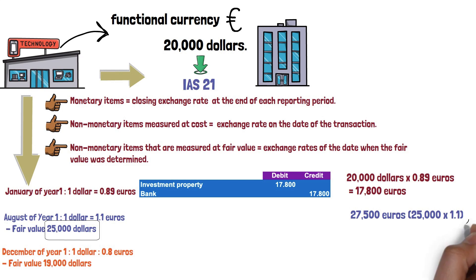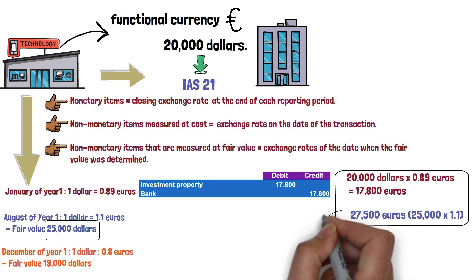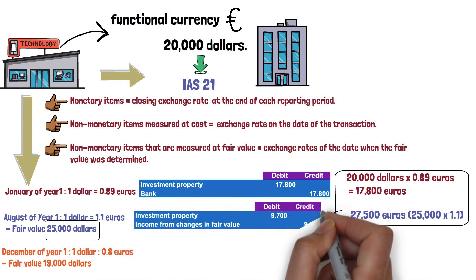As you can see, the fair value as of January of year 1 is 17,800 euros. However, the fair value as of August of year 1 is equal to 27,500 euros. For this reason, we must make an accounting adjustment for the change in the fair value of the investment property, as shown below.